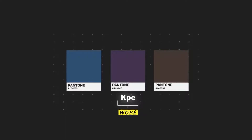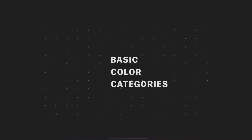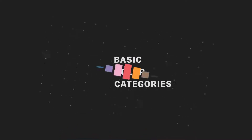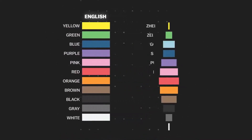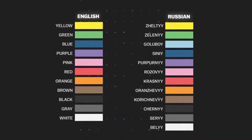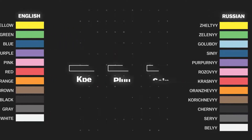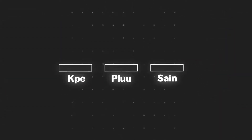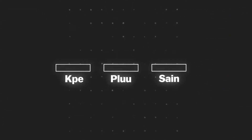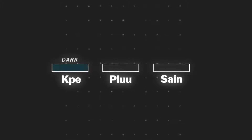That's because not all languages have the same number of basic color categories. In English, we have 11. Russian has 12, but some languages like Wobbe only have three. And researchers have found that if a language only has three or four basic colors, they can usually predict what those will be.